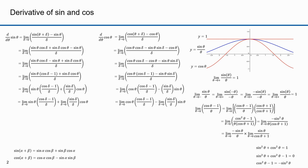I'll express this as two limits. In the first term I have the limit as theta approaches zero of minus sine theta over theta. In the second I have the limit as theta approaches zero of sine theta over cosine theta plus one. The first limit I've already derived — the limit of sine theta over theta is one, so the limit of minus sine theta over theta is minus one. In the second term, as theta approaches zero, cosine theta approaches one, so the denominator approaches two, and sine theta in the numerator approaches zero. So minus one times zero over two is zero.